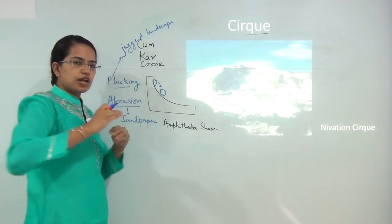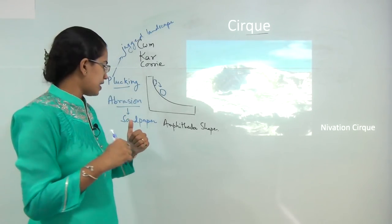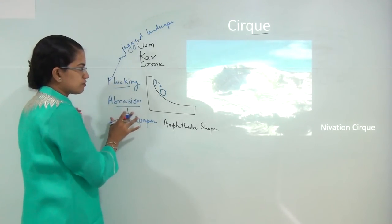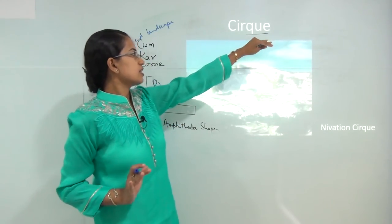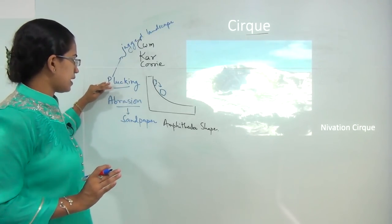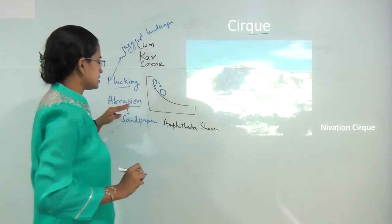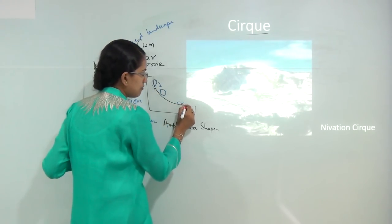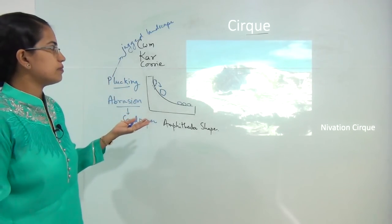Abrasion creates a kind of rough surface due to the collision of particles with the surface. During the formation of a cirque, both abrasion and plucking take place. Towards the upper surface you can see abrasion, and as it moves down, plucking activity can be predominantly seen.